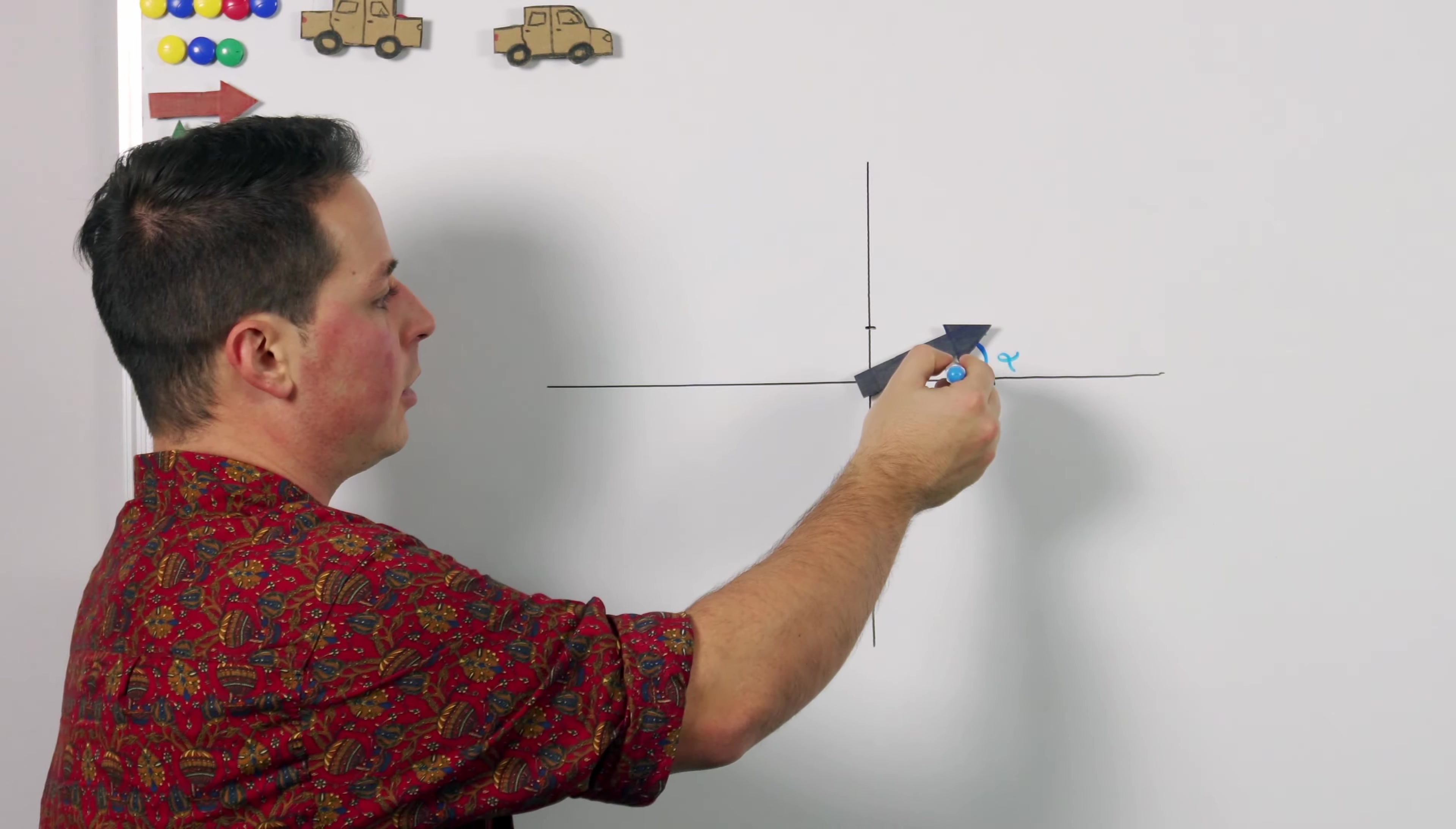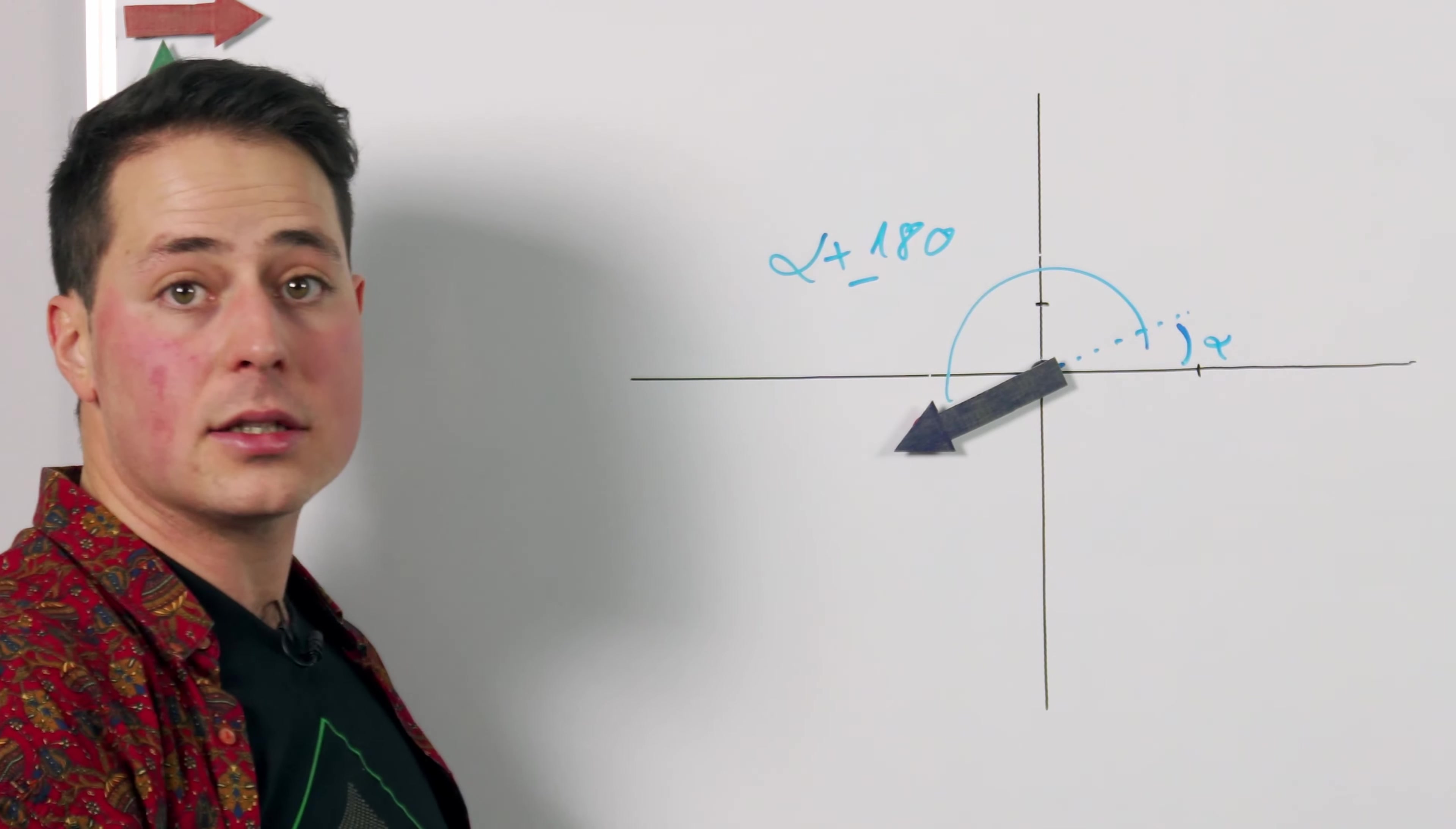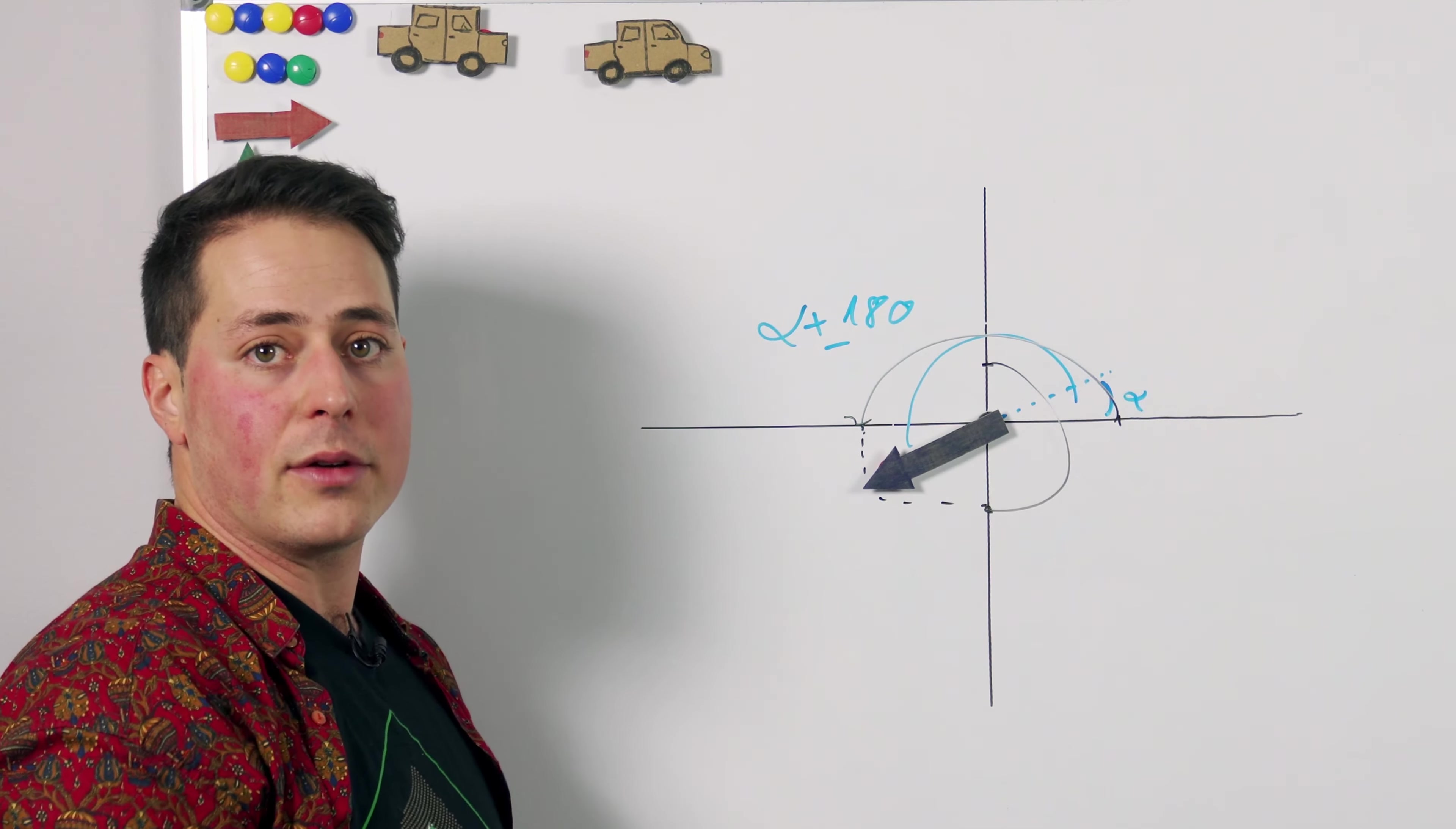This is most clear when we're using polar notation because the angle changes by 180 degrees plus or minus but the magnitude stays the same. If we were using Cartesian coordinates all we need to do is flip those independently and we would get our new vector, the flipped version of the original vector.